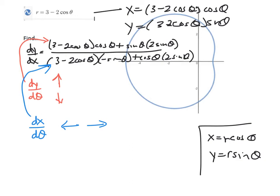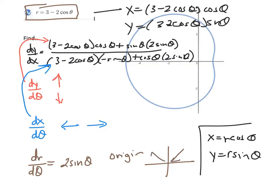And finally, kind of the last big thing you might be asked to do is dr d theta. Well, dr d theta is just saying what's the derivative of r. Well, that actually, you know, if this right up here is your r, the derivative of that was 2 sine theta. Now, what does that tell us? Well, that tells us in relation to the origin, how are we moving. So, if you think about the graph, are we moving towards the origin or are we moving away from the origin? Alright, moving on.